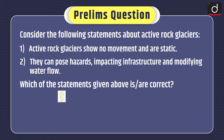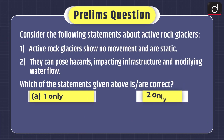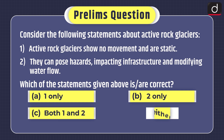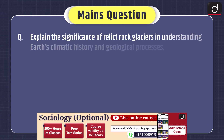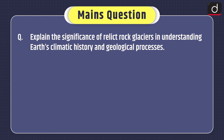Now it's time for the practice question. Prelims-based question: Consider the following statements about active rock glaciers. Statement 1: Active rock glaciers show no movement and are static. Statement 2: They can pose hazards, impacting infrastructure and modifying water flow. Which of the statements given above is or are correct? One only, two only, both one and two, or neither one nor two. Mains practice question: Explain the significance of relict rock glaciers in understanding Earth's climatic history and geological processes.